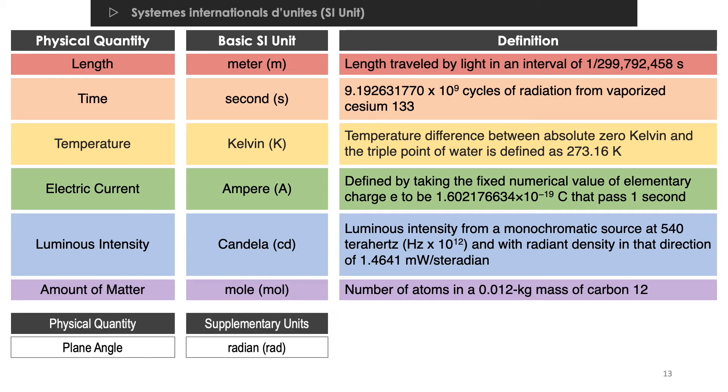When we talk about plane angle, we specify it with a unit of radian. But when we talk about solid angle, then we specify it with a unit of steradian.